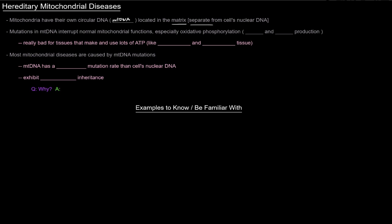Mutations in the mitochondrial DNA interrupt normal mitochondrial functions, especially oxidative phosphorylation, which we're talking about the electron transport chain and ATP production. That's really bad for tissues that make and use lots of ATP.